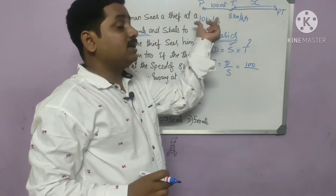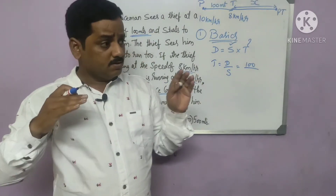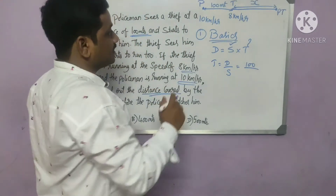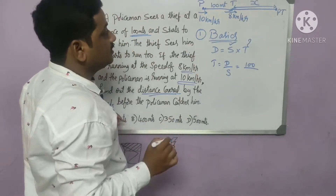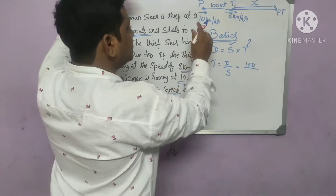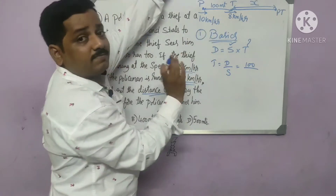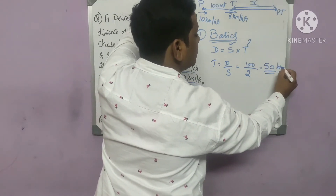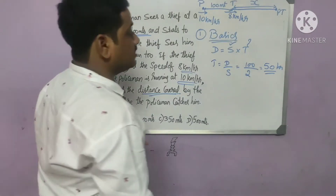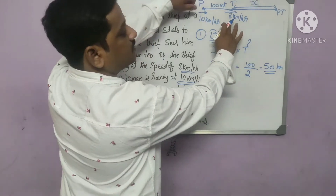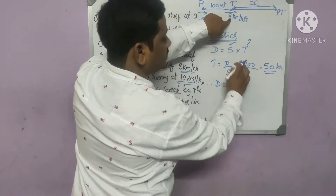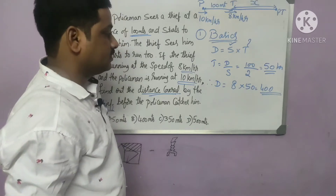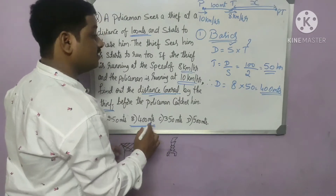Relative speed means the speeds are in the same direction. The relative speed is 10 minus 8, which is 2 km per hour. So the distance is 100 meters divided by relative speed 2, giving time equal to 50 hours. Therefore, D equals speed into time: 8 km per hour into 50, so totally 400 meters is the distance. Option B will be the answer.